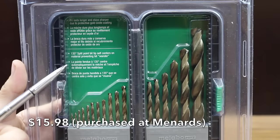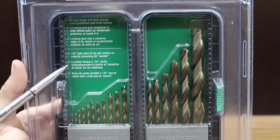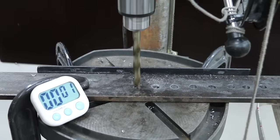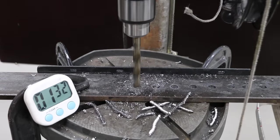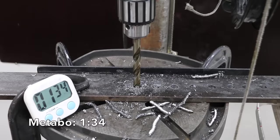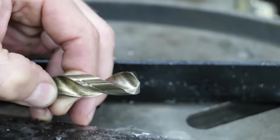Costing $15.98 is this Gold Oxide 17-piece set made by Metabo and sold at Menards. 1:34 with Metabo. The tip of the drill is about 110 degrees Fahrenheit. No visible wear with Metabo.